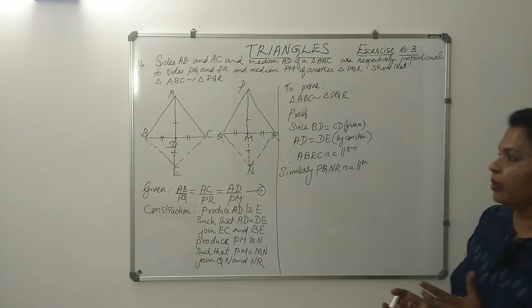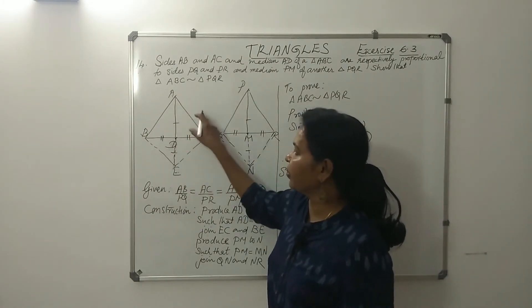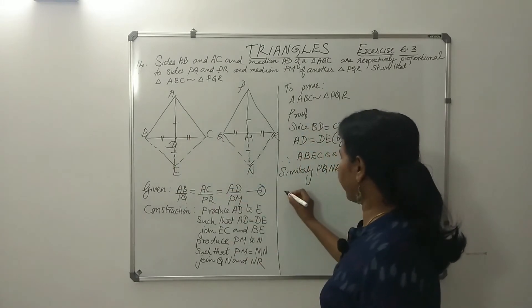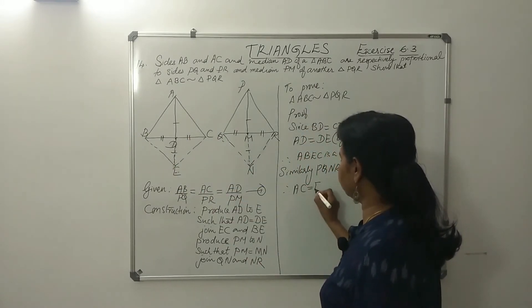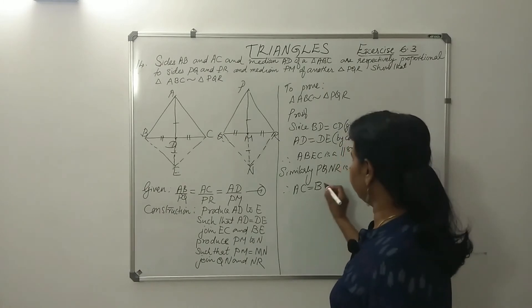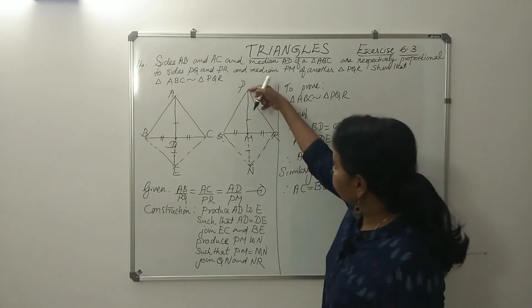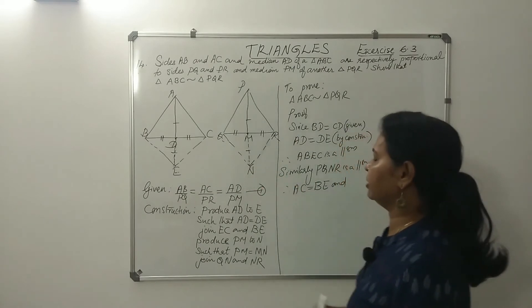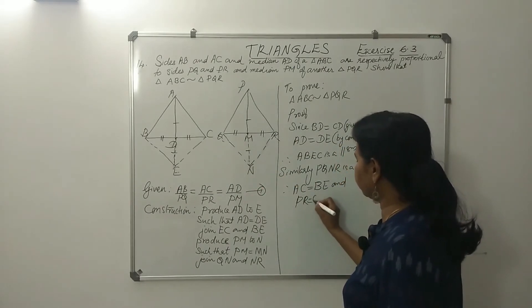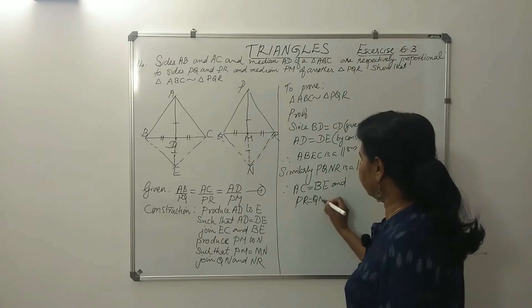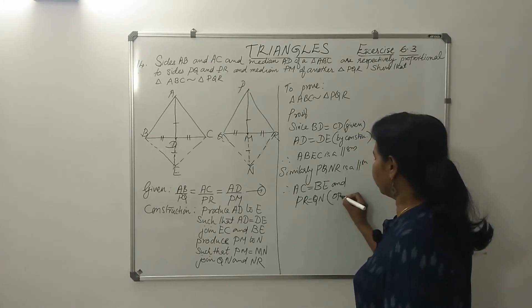In parallelograms, opposite sides are equal. So AC equal to BE, and PR equal to QN — opposite sides of the parallelogram.